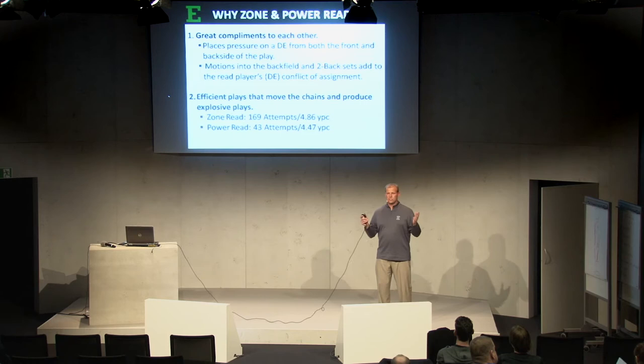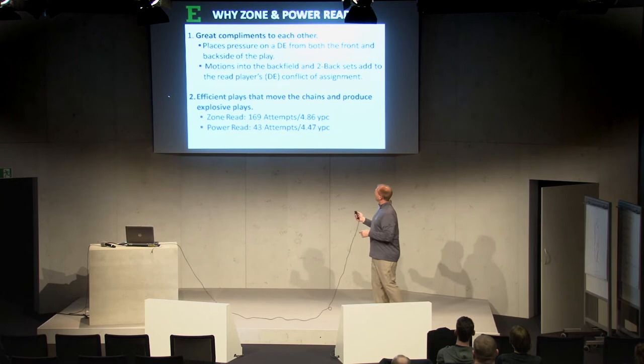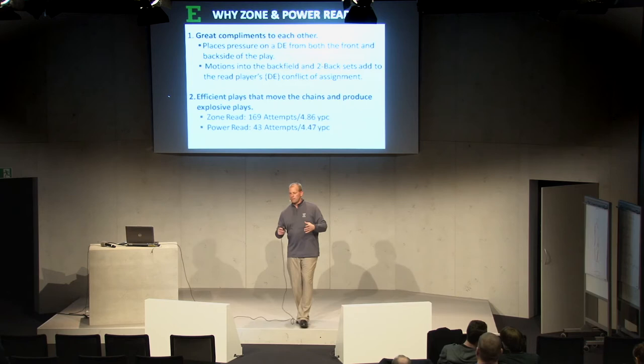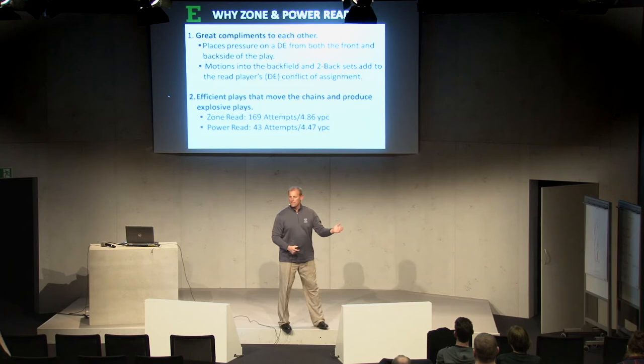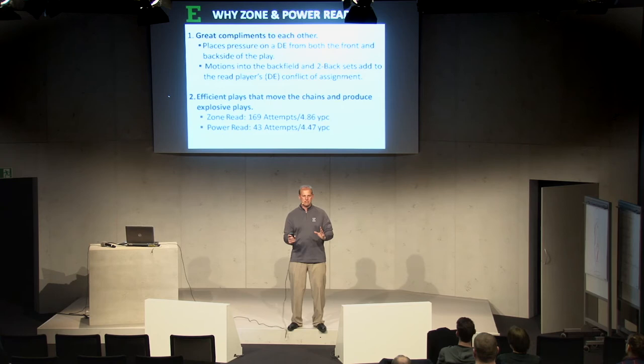These are our two base plays — this is where it starts. They're great complements to each other. They place pressure on the D-ends from both the front side and the back side. If we're running zone read and I have the tailback to my left, we're going to read that left defensive end. At some point that left defensive end realizes how he plays the zone read — well, that defensive end is getting locked on this zone read. The next play, the tailback's in the same spot, but now we're running the power read and reading the other defensive end.